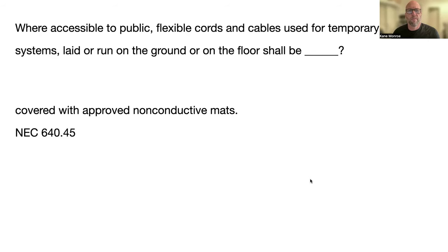For 120 volt / 277 volt overhead service conductors passing over commercial areas not subject to truck traffic, shall have a vertical clearance above grade of not less than blank. And that's 12 feet. You can find that in 230.24B2.